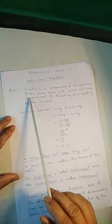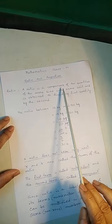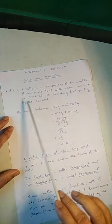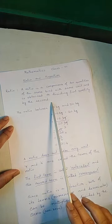Hello children. Today I am going to discuss ratio and proportion. A ratio is a comparison of two quantities of the same kind with the same unit and is obtained on dividing the first quantity by the second one.